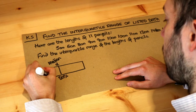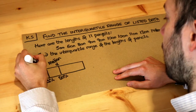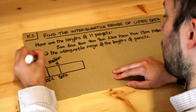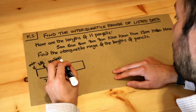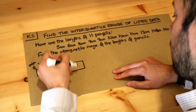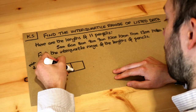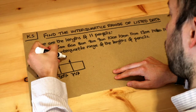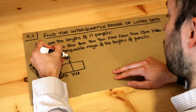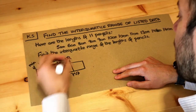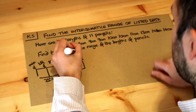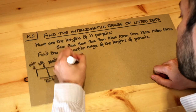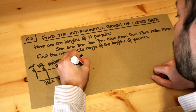If you went a quarter of the way along, so 25%, that was the lower quartile — LQ for short. And if you went 75% of the way, that is the upper quartile — UQ for short. Then your maximum value, in this case 14, would be here, at 100% of the way.